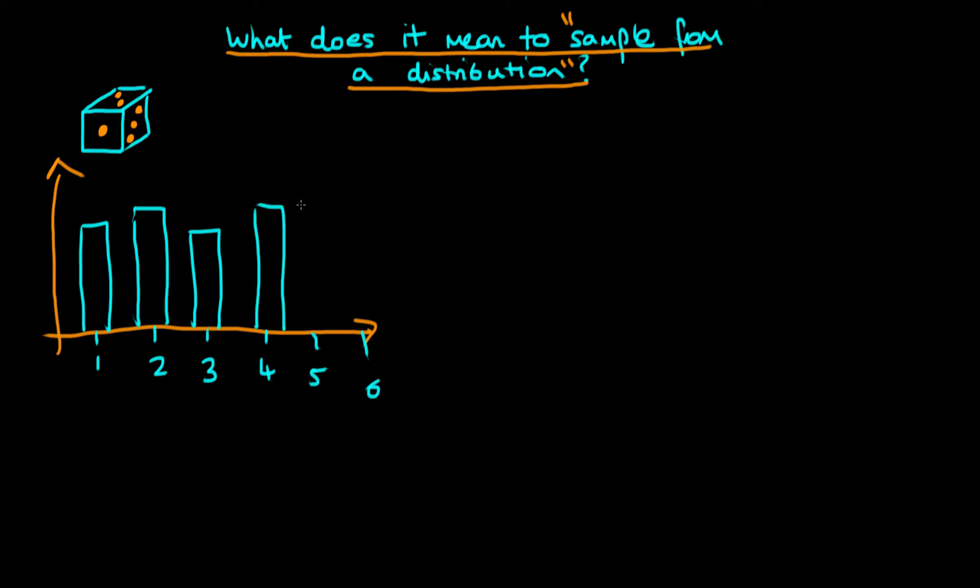If it was a fair die, each of the heights of these rectangles here that I'm drawing should be roughly the same if we throw the die a large number of times. But in a small enough sample they would differ just because of sampling variation. So sampling from this die seems to make quite a lot of sense.